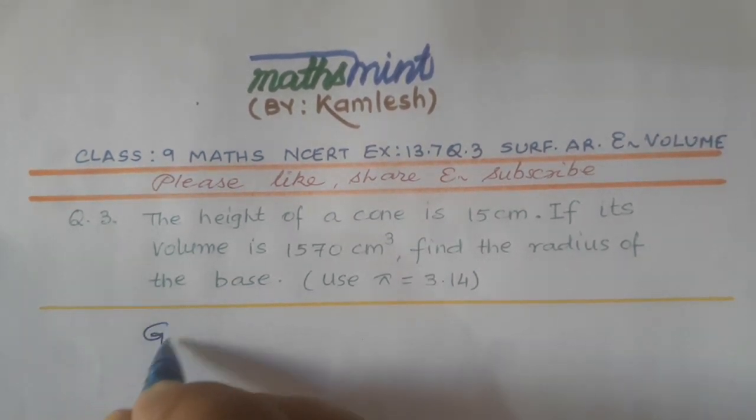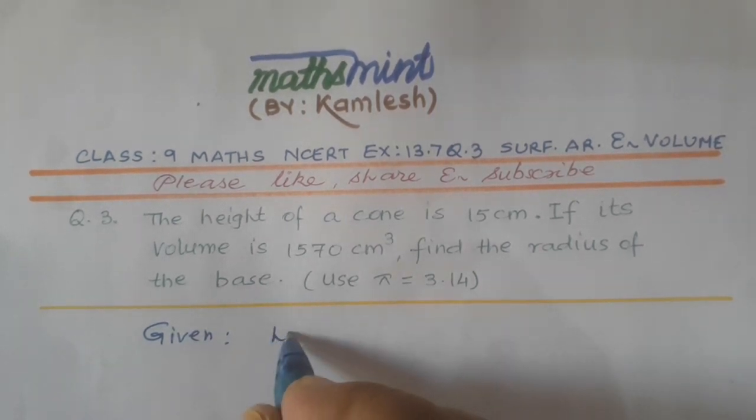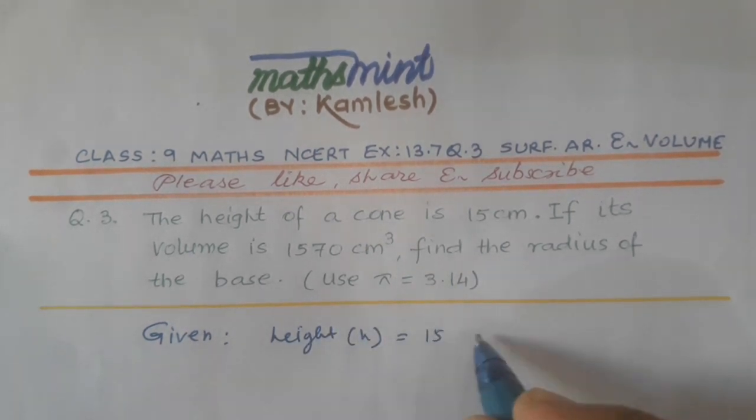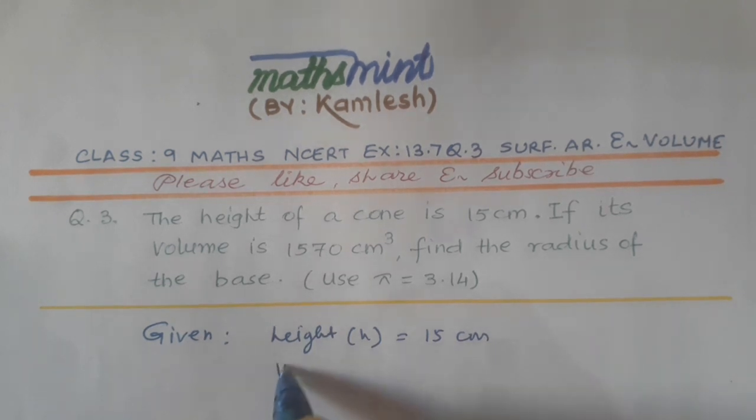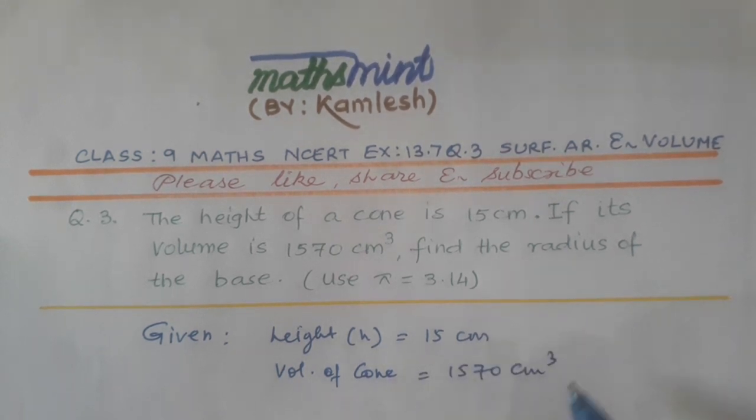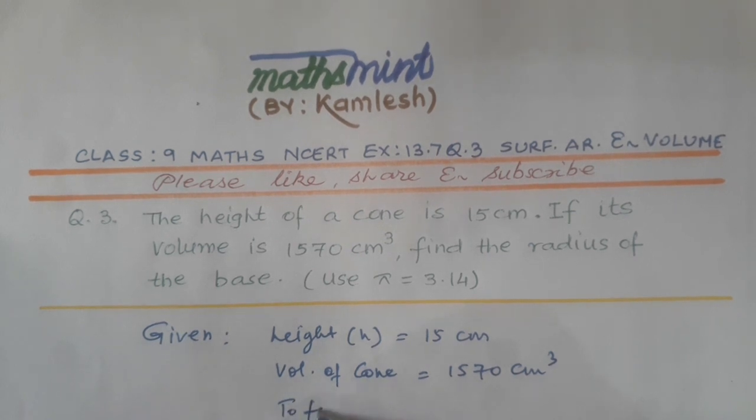Let's write given. What is given: Height (H) is equal to 15 cm. Volume of cone equal to 1570 cm³. To find: